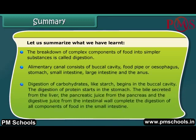Digestion of carbohydrates like starch begins in the buccal cavity. The digestion of protein starts in the stomach. The bile secreted from the liver, the pancreatic juice from the pancreas, and the digestive juice from the intestinal wall complete the digestion of all components of food in the small intestine.